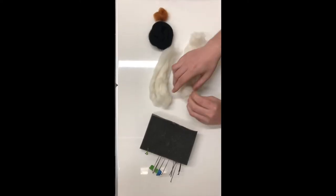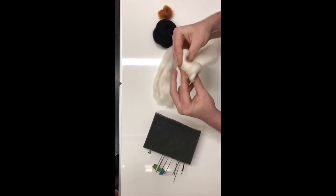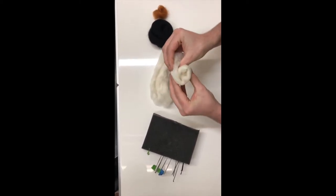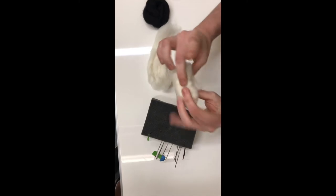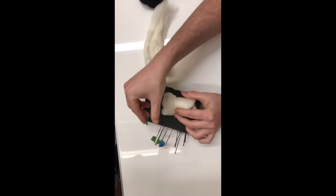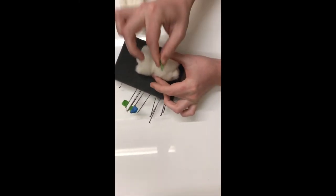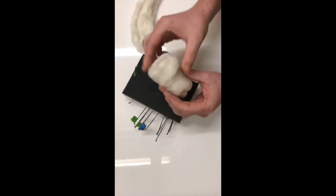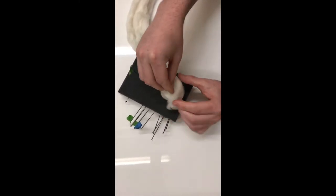We're going to take our base wool. I like to use white just because it's a good filler. We're going to wrap it around itself so we get a kind of tight little burrito. We're going to take our felting needle and start poking into it. Our object is to make a nice sphere.